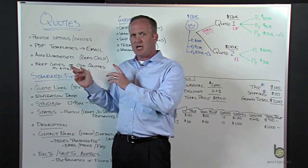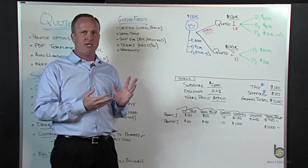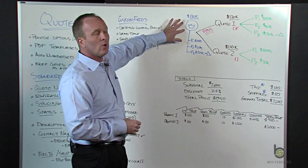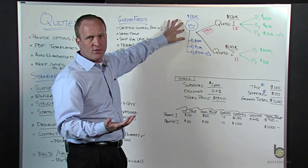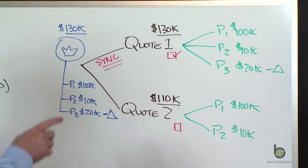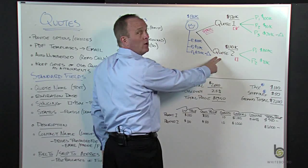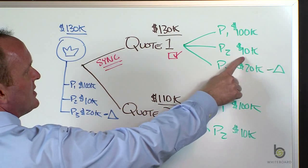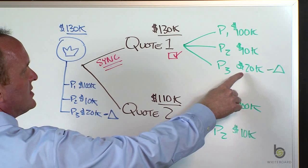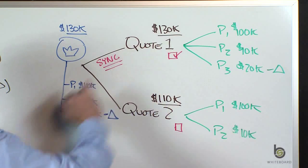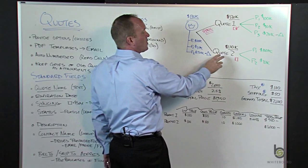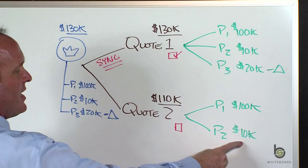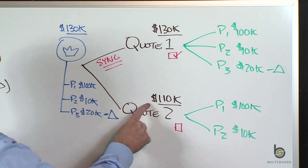I'm going to slide to this side of the board and give you a visual representation of why quotes might be advantageous to your sales organization. Our little blue coin icon represents our opportunity in our org — it's attached to a company. From there I've got quote one and quote two. Quote one has three products: one at $100,000, one at $10,000, one at $20,000. Add all three together, that quote is for $130,000. Quote two only has product one for $100,000 and product two for $10,000, so this quote is $110,000.